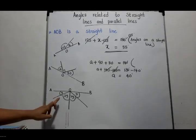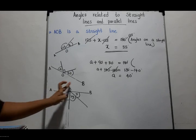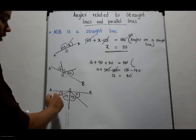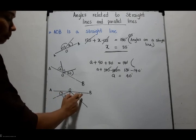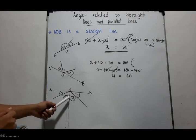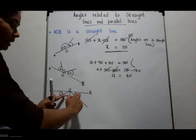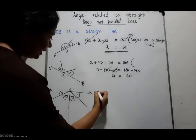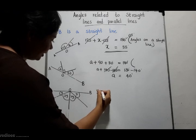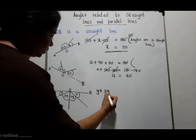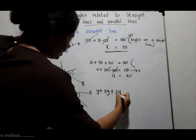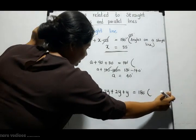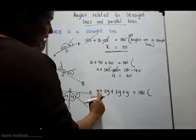Now, come to this example. Here, AOB is a straight line. There are four adjacent angles, but you are not given the magnitude of any angle — they are Y, 2Y, 2Y, and Y. We know the sum of these four angles is 180 degrees because they are on a straight line.